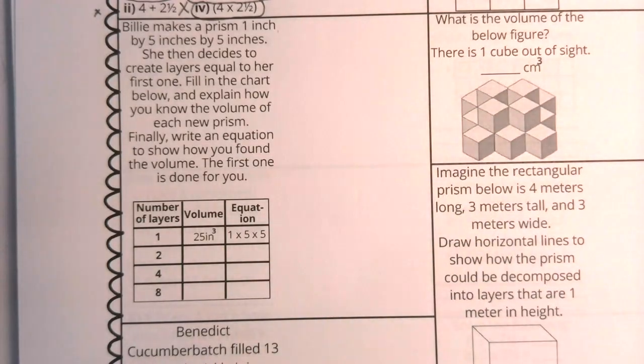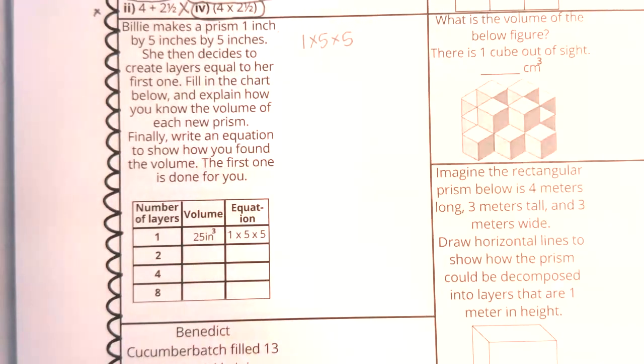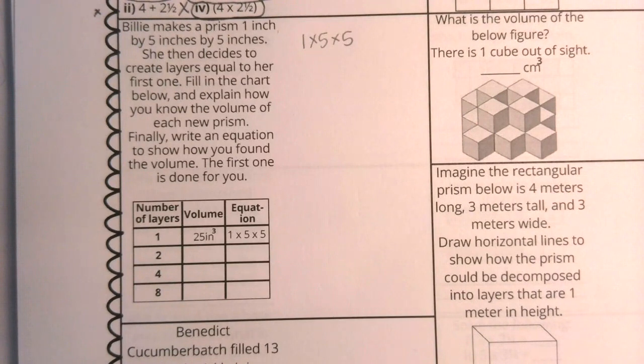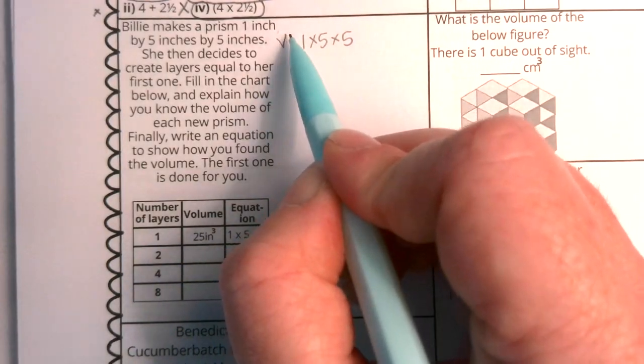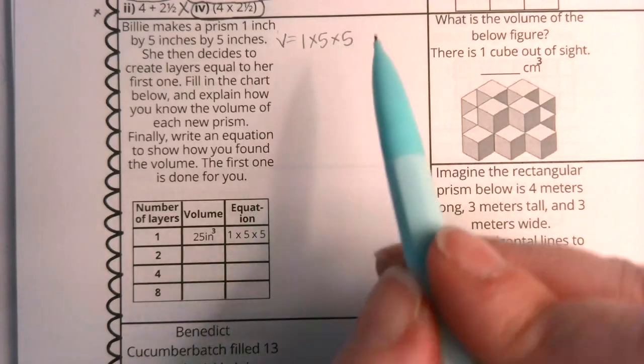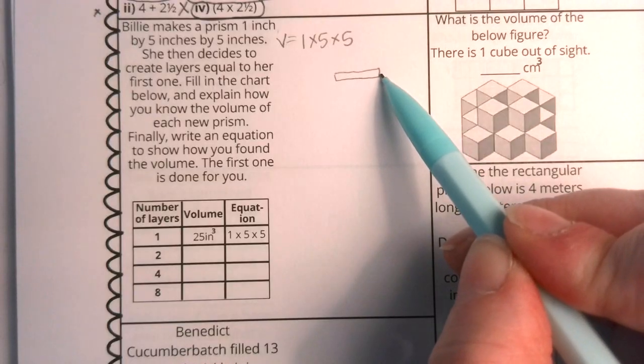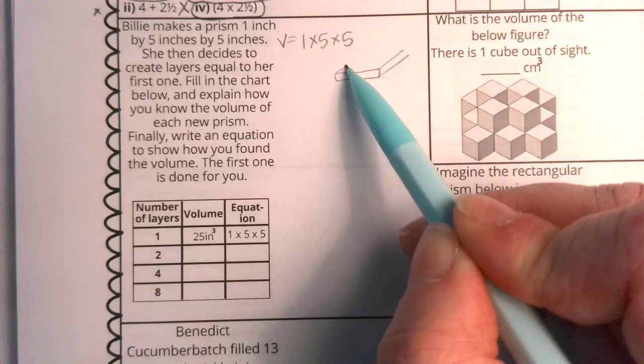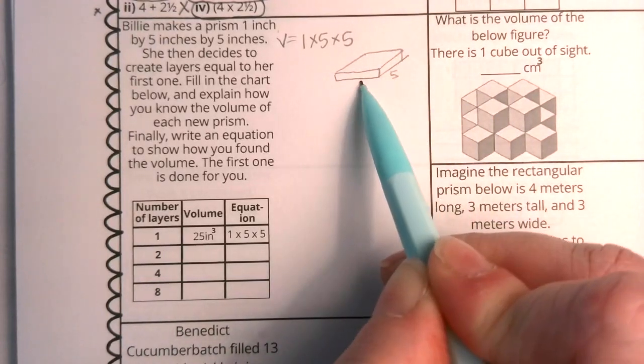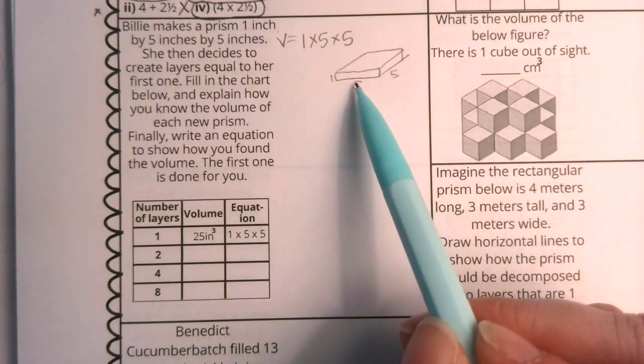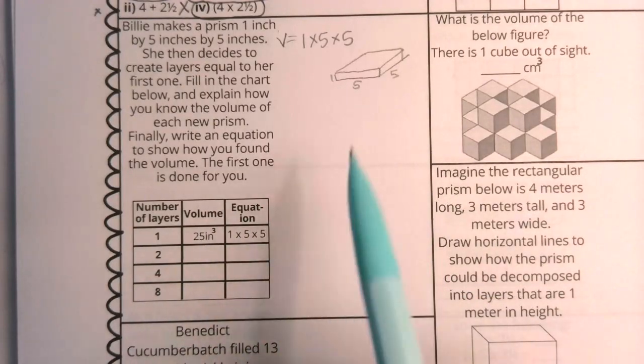This one takes up two spaces. There's a lot of thinking in this problem. Let's dive in. This says, Billy makes a prism one inch by five inches by five inches. I'm just going to write that down so that I can have some scrap work to consider. She then decides to create layers equal to her first one. Fill in the chart below and then explain how you know the volume of each new prism. Finally, write an equation to show how you found the volume. The first one is done for you. So this is the thing that she made, right? She made a figure that was one by five by five. Now I could, just for the sake of helping you see what we're talking about, I could go ahead and draw this. And if I drew this out, you would see just a very short little prism. Certainly, I see five times five, which gave me 25, but then it was just one layer, right? This is what it looks like.